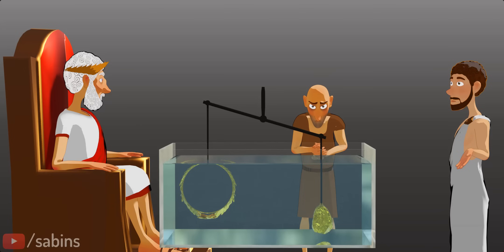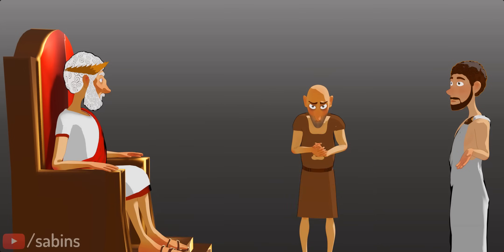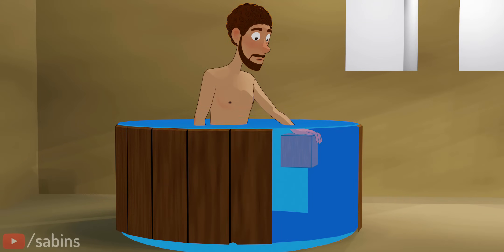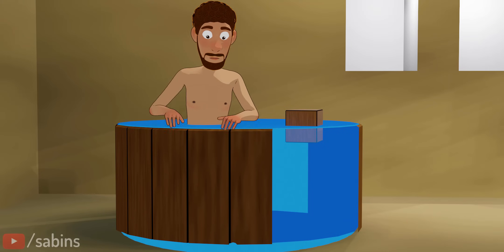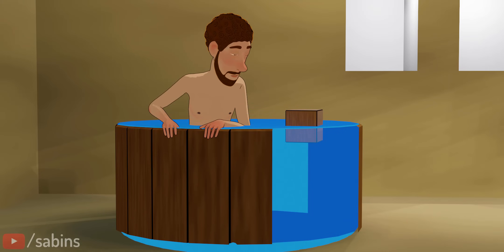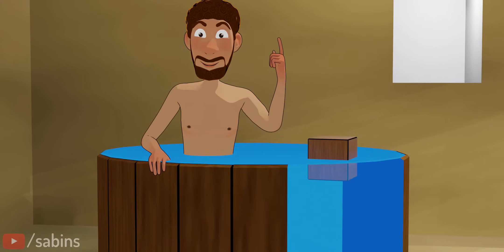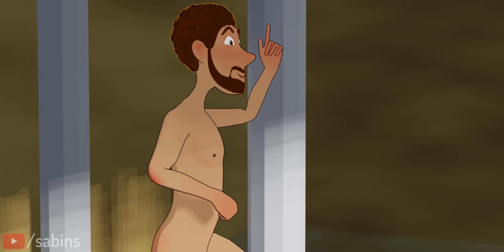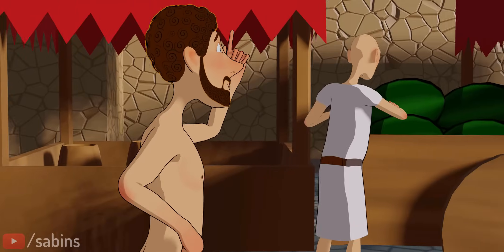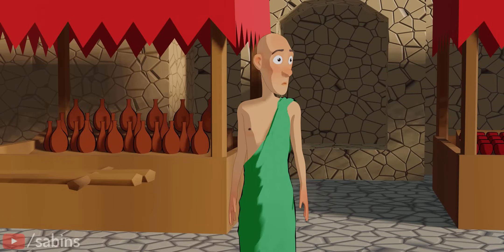This is why Archimedes got so excited during his bath. He realized that any object surrounding a fluid receives a force from the fluid, with a magnitude equal to the displaced fluid's weight, and this force will be in opposite direction to the object's weight. We hope this video gave you a clear understanding about the Archimedes' principle and buoyancy force. Thank you.